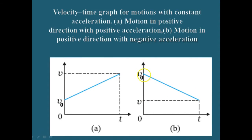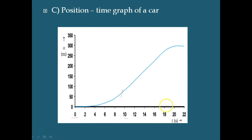The second case represents an object which is moving in a positive direction but with a negative acceleration — it is moving in the positive direction but the acceleration is decreasing. For example, we can consider the same car from 18 to 20 seconds, where it is moving in positive direction but with negative acceleration.